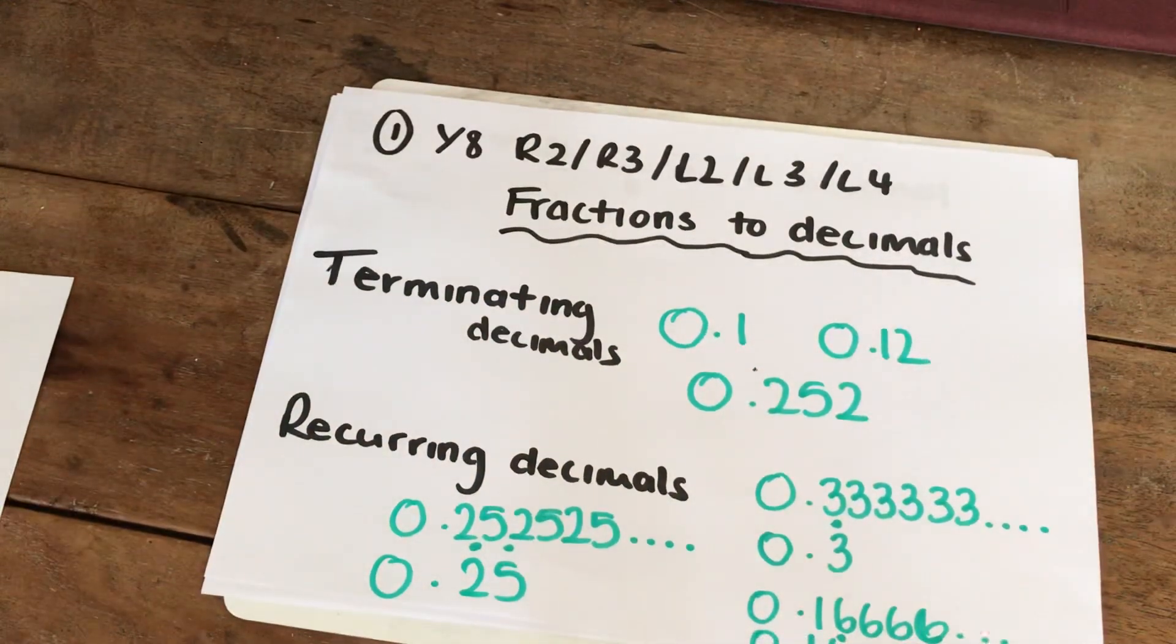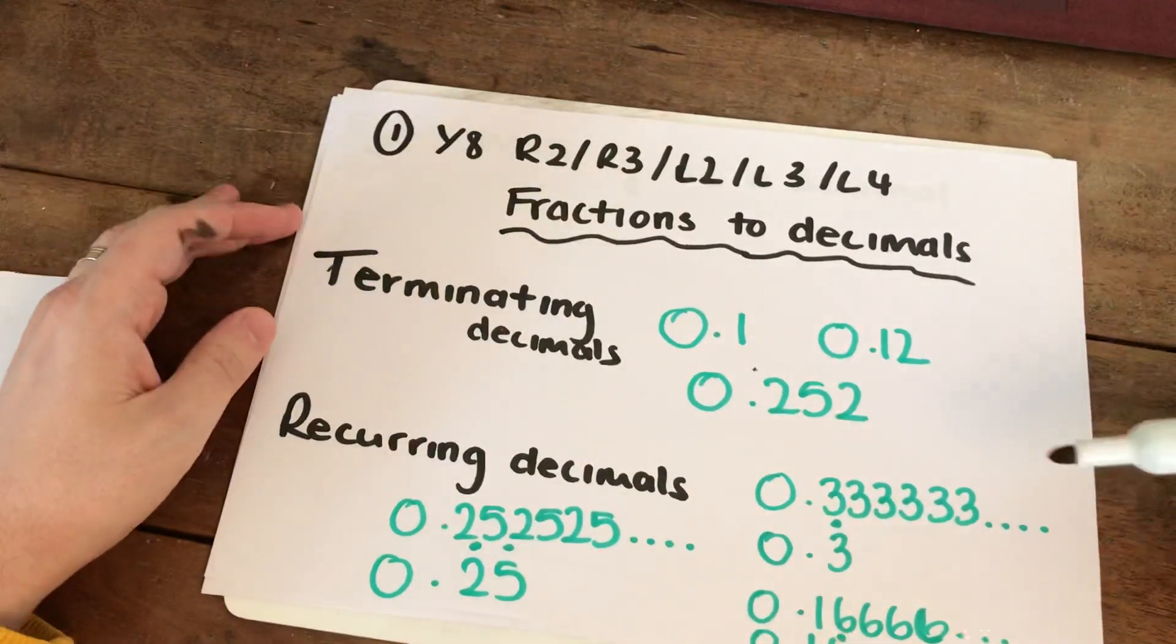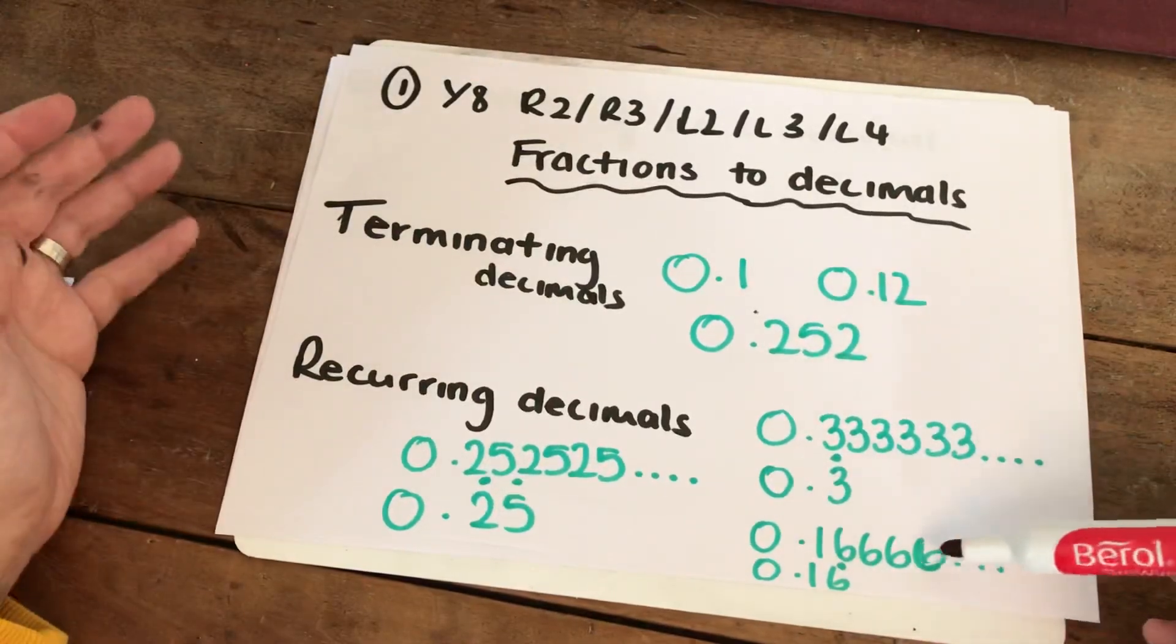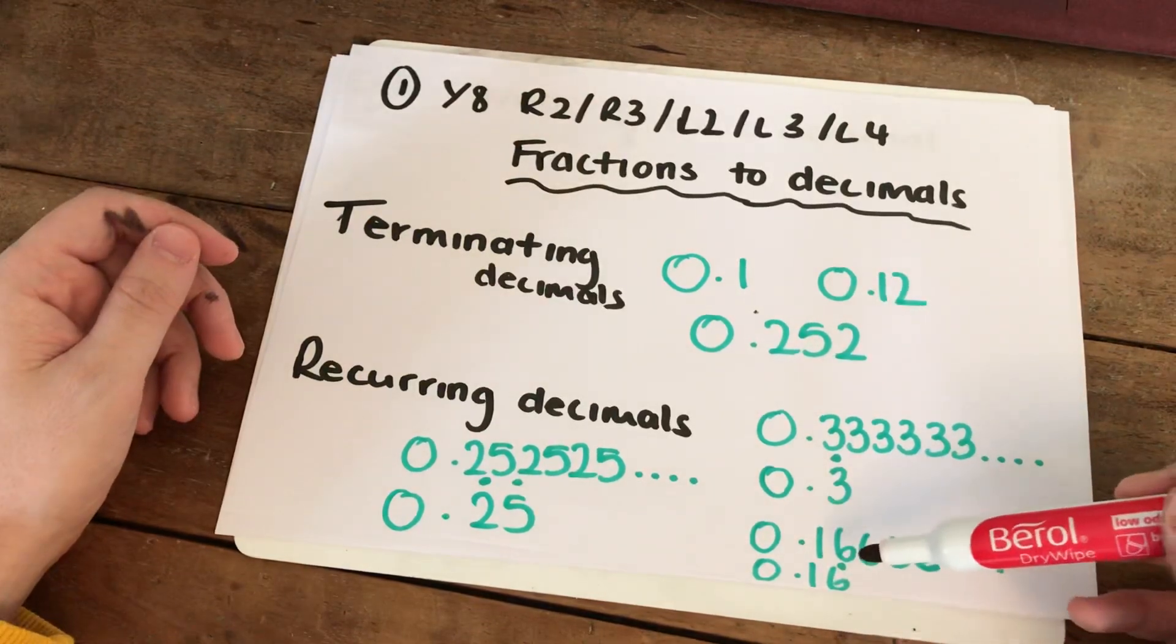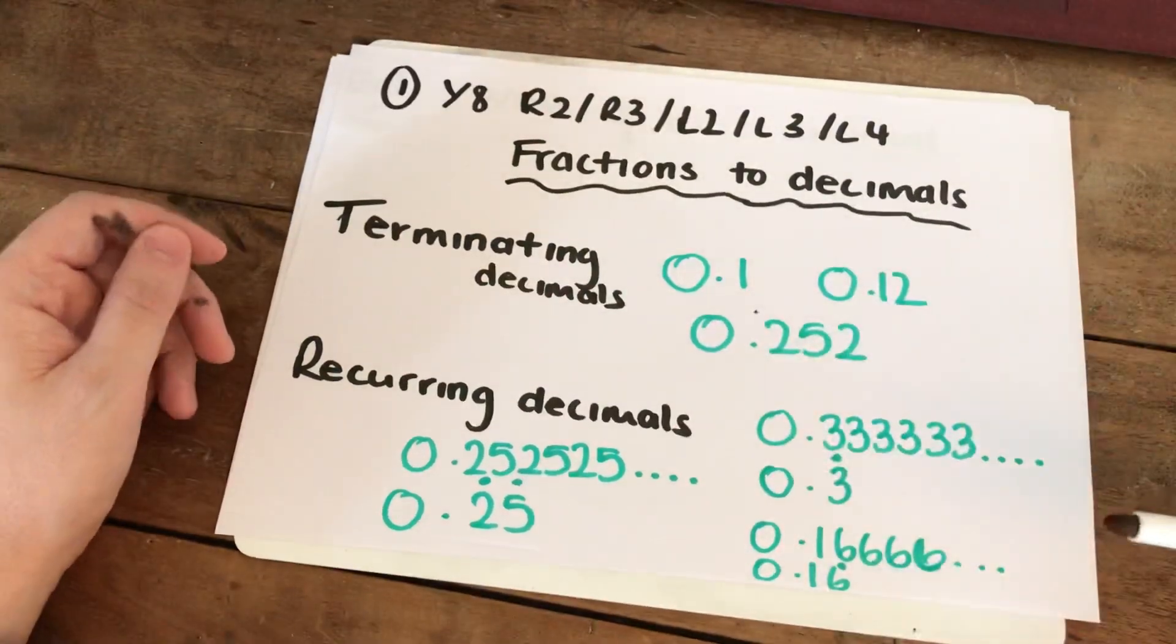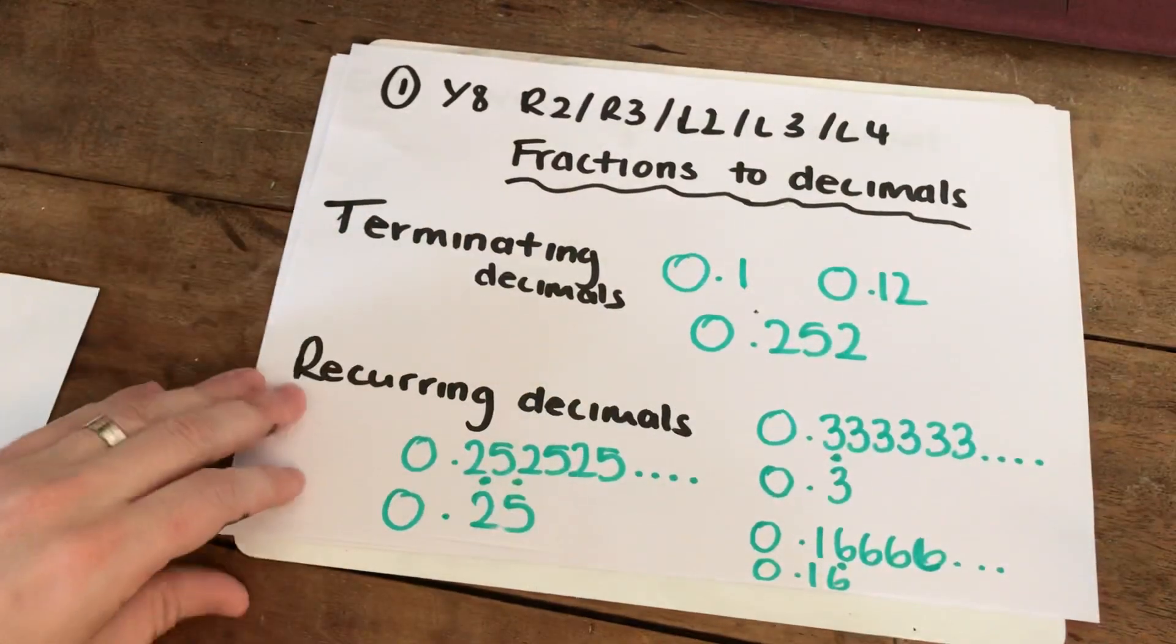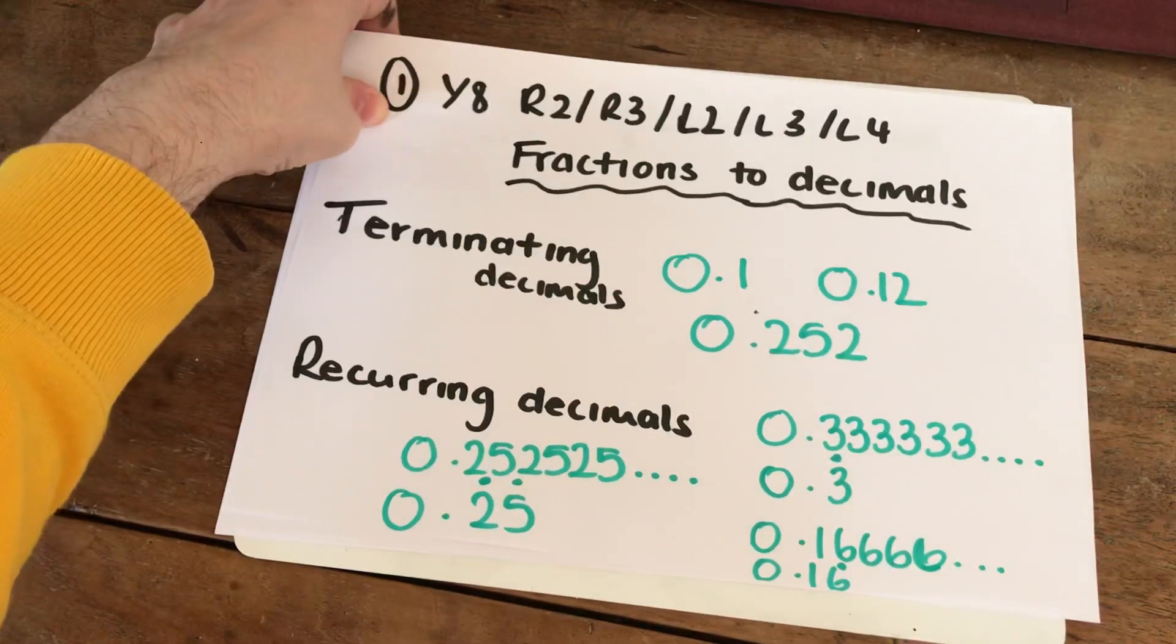The other type are recurring decimals. The most common recurring decimal you've probably seen is 0.33333, which can be written as 0.3 recurring. You can also have 0.1666, written as 0.16 recurring. Notice that the decimal point goes over the recurring number. If there is more than one recurring number, for example 0.252525, you put the recurring signs over both digits. So there are two different types of decimals that you're going to use during this video.